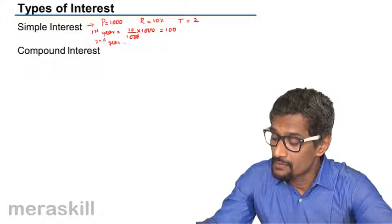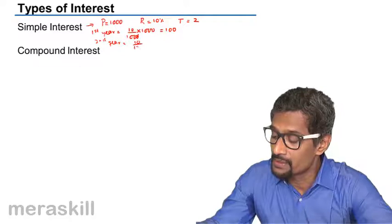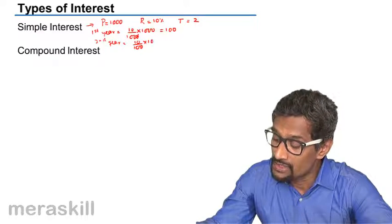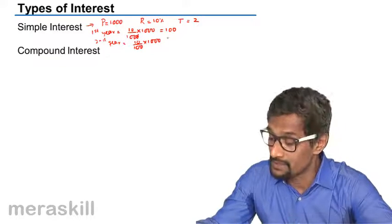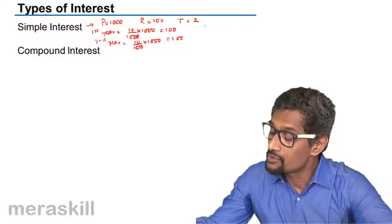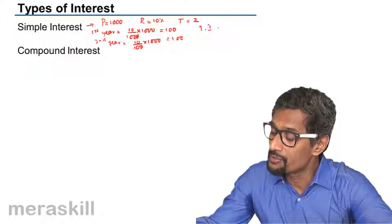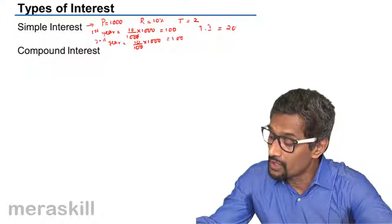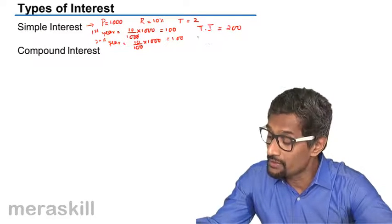And for second year, it's again going to be 10% of 1000 itself because the principle still remains the same. So total interest is going to be 100 plus 100, which equals 200.